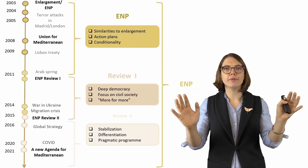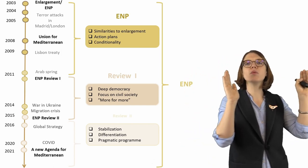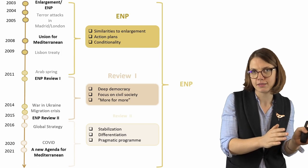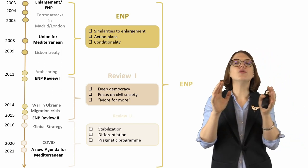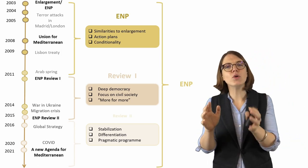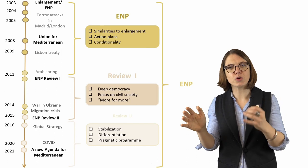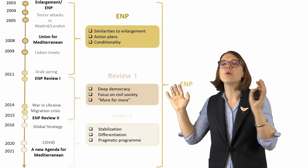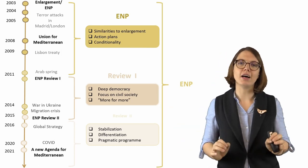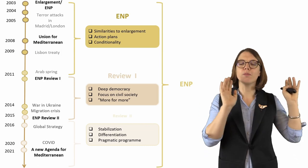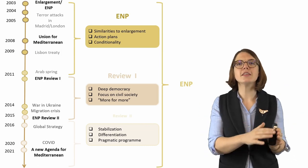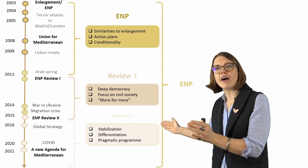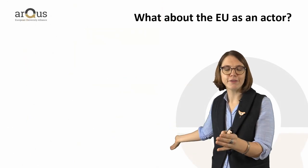To sum up: the EU started saying it wanted to create a shared Mediterranean space, then moved to saying it wanted to transform its neighbors as normative power Europe, and finally shifted to saying it wants to stabilize the neighborhood. The trajectory goes from the Mediterranean space to a ring of friends, to extinguishing fires in a ring of fire.